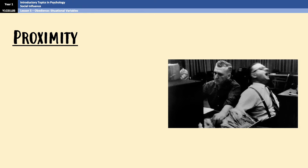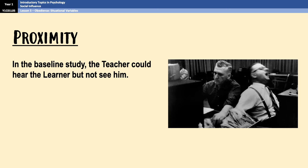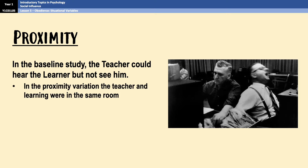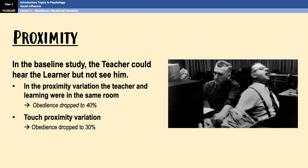The second variation is the proximity variation, and this was all about the distance between the learner, the teacher, and the authority figure, and how a change in that distance could affect obedience. In Milgram's baseline study, the teacher and the learner were in separate rooms, so the teacher could hear the learner but couldn't see him. In the proximity variation, that was changed in a number of different ways. In one version, the teacher and the learner were in the same room and obedience rates dropped from the original 65% to 40%. There was also a touch proximity variation in which the teacher had to force the learner's hand onto an electric shock plate if they refused, and obedience dropped further to 30%. In a final version — the remote instruction variation — the experimenter left the room and gave instructions via telephone, and obedience levels dropped again to 20.5%.